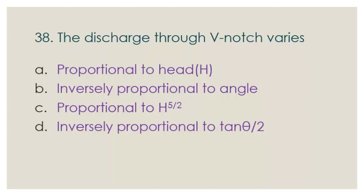Question number 38: The discharge through a V-notch varies — options include: proportional to head, inversely proportional to angle, proportional to H raised to 5/2, or inversely proportional to tan(θ/2). The discharge through a V-notch is proportional to H raised to 5/2, so option C is the correct answer.